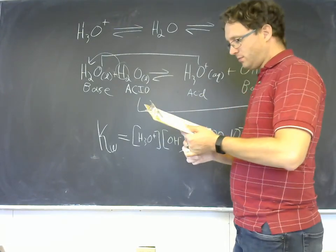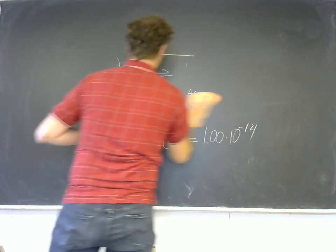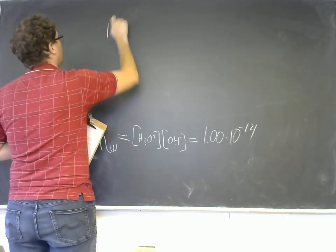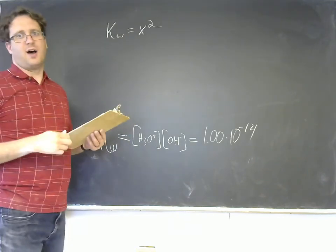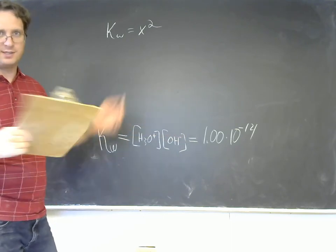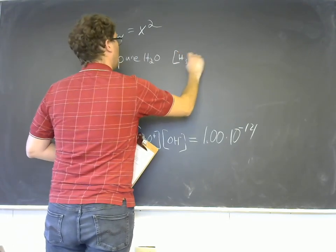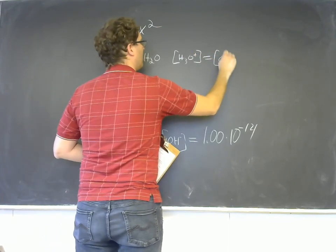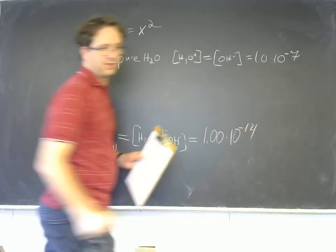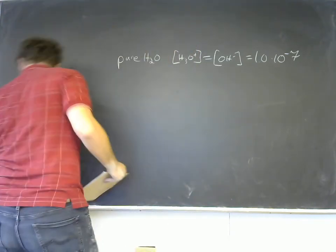Now, let's think about if I have pure water. I'm just going to erase some stuff here. Now, if I have pure water and I do an ice table, I'm going to end up with KW is equal to X squared, right? Because the change will be plus X, and so I'll end up with X for H3O plus and X for OH minus. It's the easiest ice table in the world. And so that means that for pure water, we have a concentration of H3O plus that is going to be equal to the concentration of OH minus, and that's going to equal 1.0 times 10 to the negative 7th.